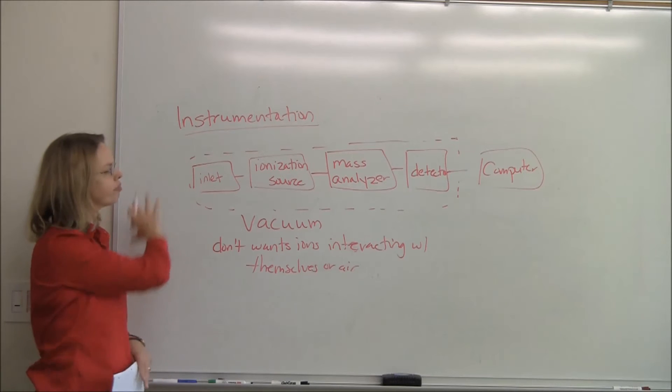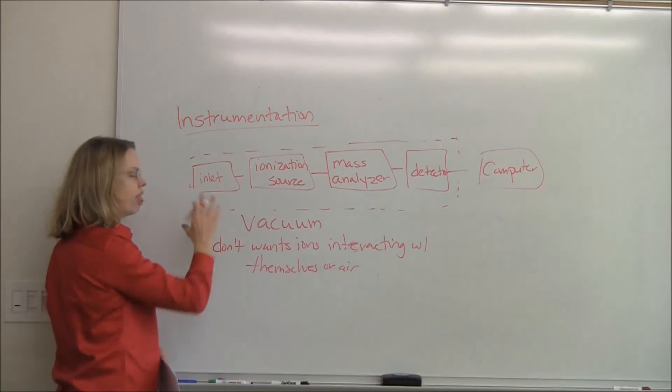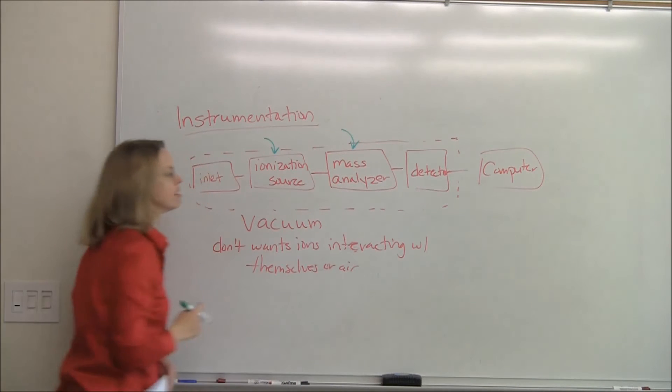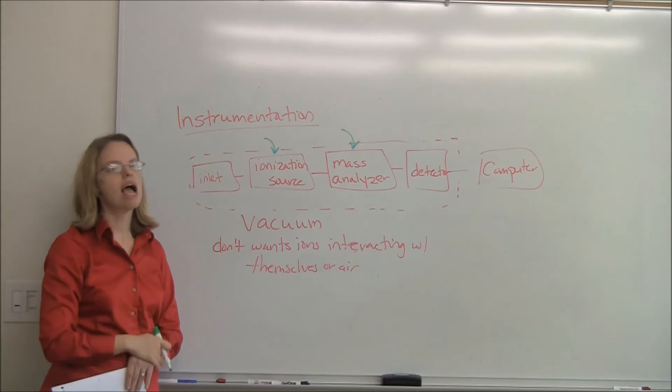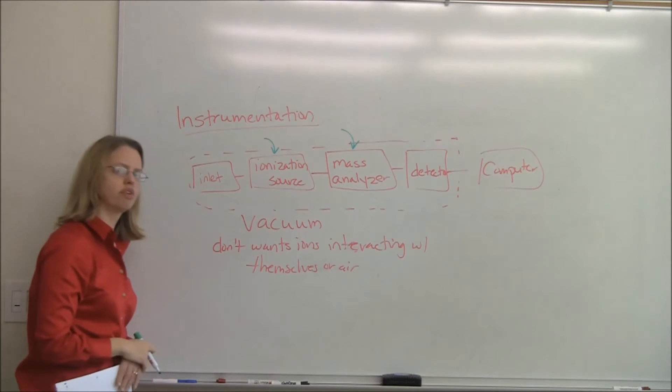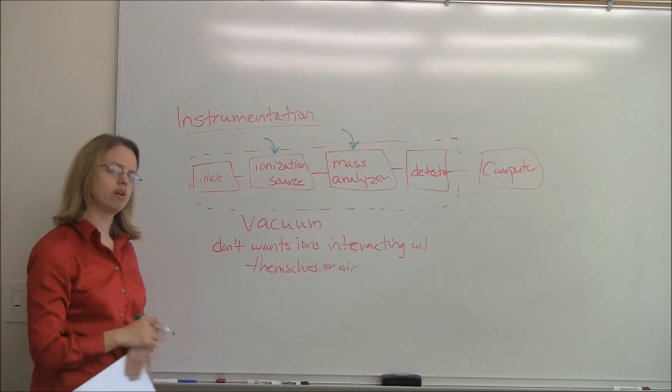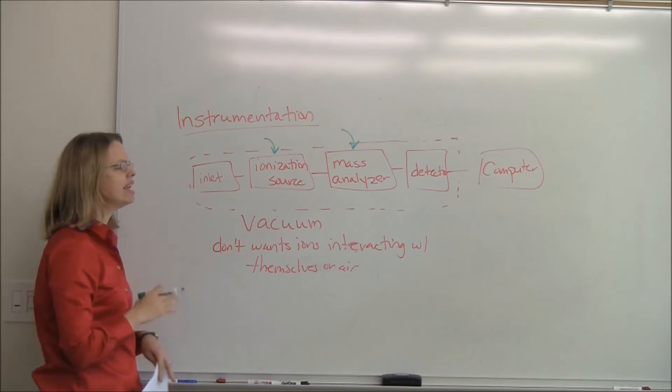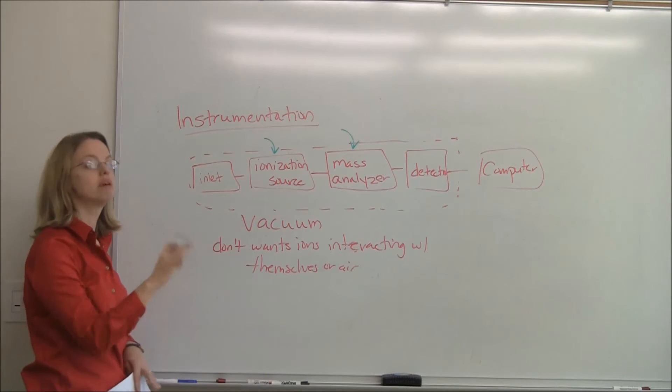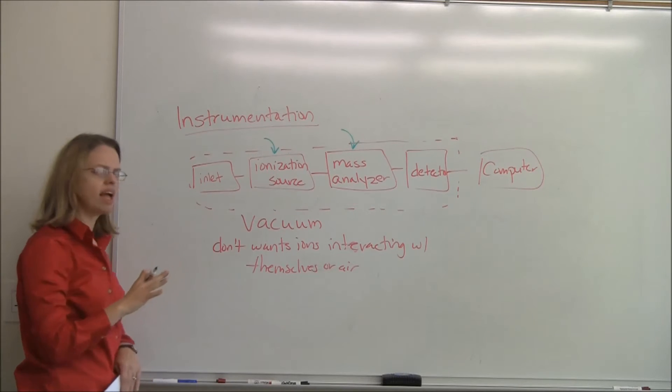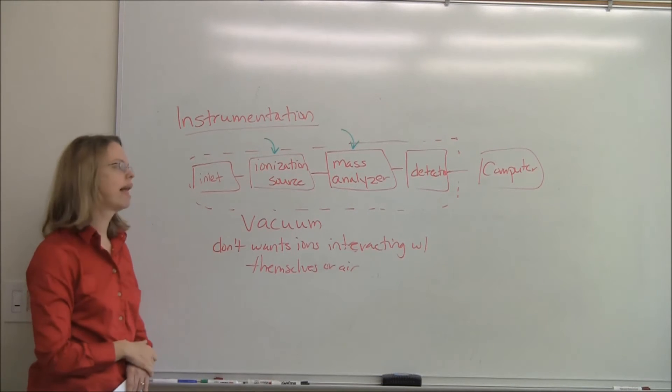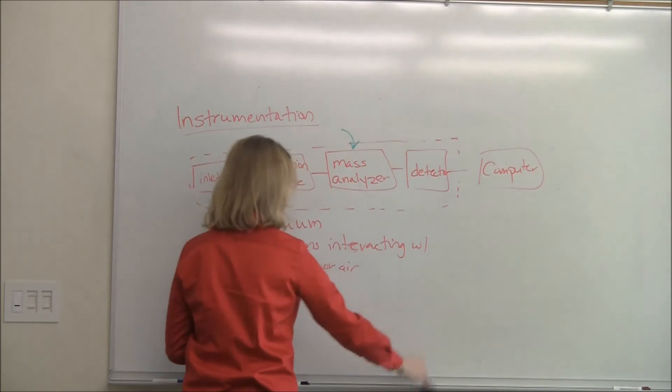As we look at mass spec instrumentation, the two biggies here are really the ionization source and the mass analyzer. And mass spec is a field full of acronyms. And the acronyms all go like this. They'll tell you the ionization source dash the mass analyzer. So if you're doing ESI dash quadrupole, or ESI-TOF, or even ESI-TOF-TOF, they'll tell you an ionization source and then a mass analyzer. And sometimes there's more than one mass analyzer. And so if you're going to learn the abbreviations, at least you know how they're set up. This is not a comprehensive mass spec class, but I think it's interesting and useful to be introduced to some of them.